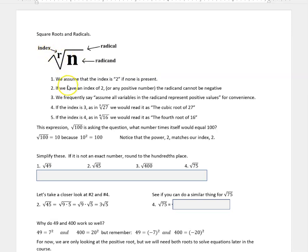If we don't see a number there, we assume that it's 2. If we have an index of 2, or any positive number, the radicand cannot be negative. We can't take the square root of something negative. If you try it on your calculator, you get an error message. Later on, you learned about i, but for now, we can't do it. We're just going to say DNE, or does not exist when that happens. We frequently say assume all variables in the radicand represent positive values. That's for our convenience, and we'll look at why that is in a minute.